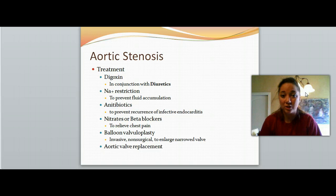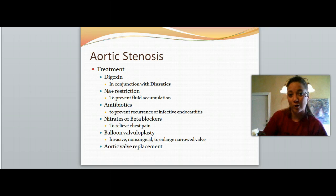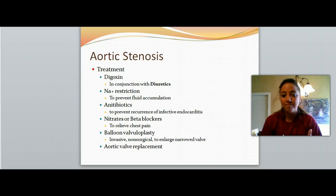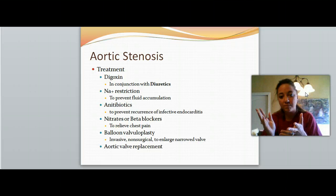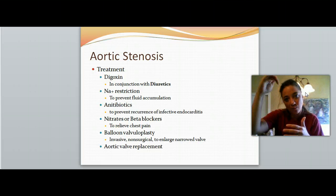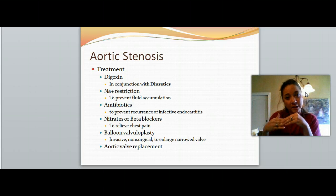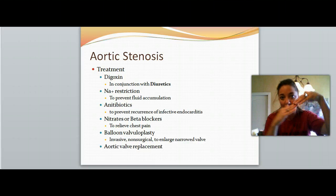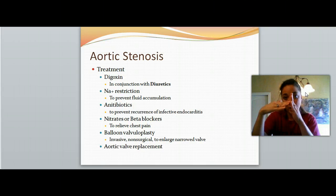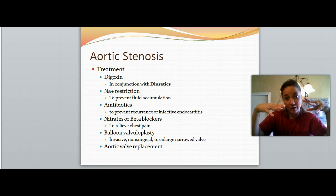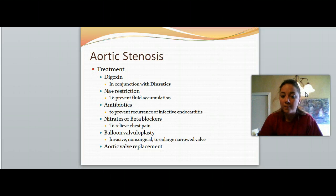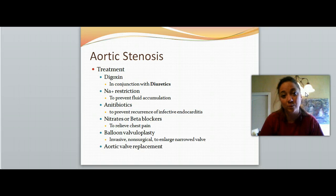Give them some nitrates or beta blockers to help relieve the chest pain. Maybe a balloon valvuloplasty — it's invasive but non-surgical, and it just helps to enlarge that narrowed opening within the valve. They insert a guide wire directly into the heart with a little deflated balloon on the end, bring it up into that valve space, then inflate the balloon to stretch open that valve opening. If it's really bad and none of these things work, they might have to do a valve replacement on the aortic valve — that is the last-ditch effort.